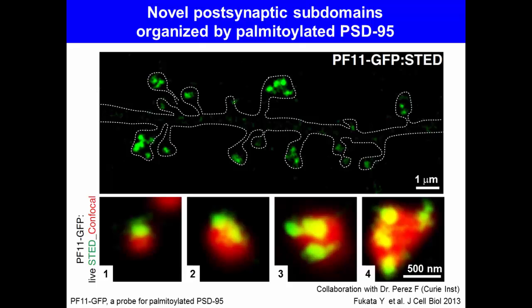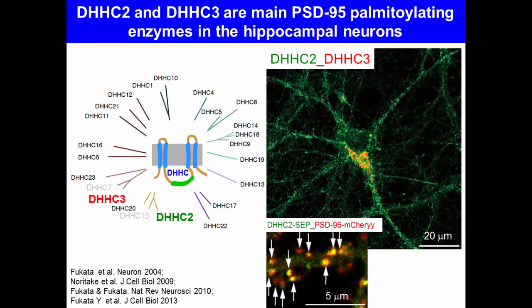Here, green color indicates the subsynaptic nanodomains with a diameter of about 200 nanometers. So, we asked what defines the postsynaptic nanodomains of PSD95.